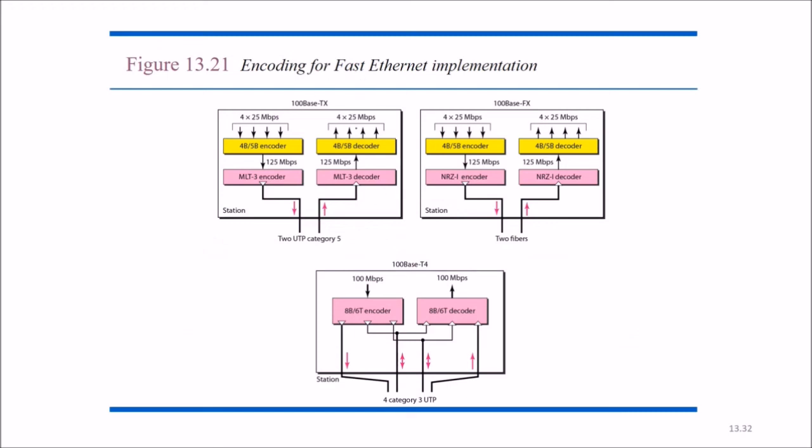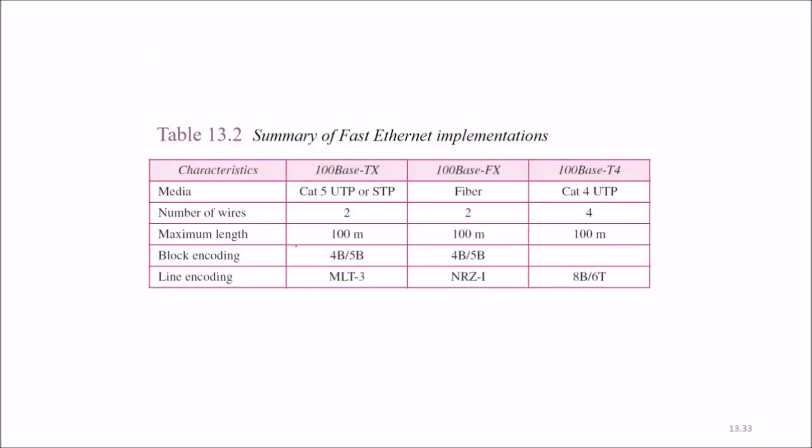This is the encoding of fast Ethernet implementation: two UTP category 5, here two fibers are there, here four category 3 UTP. These wires are used for 100BaseTX, 100BaseFX, and 100BaseT4. Summary of fast Ethernet implementation with respect to the media, number of wires, maximum length, and block encoding, line encoding. These were the parameters we have just seen.